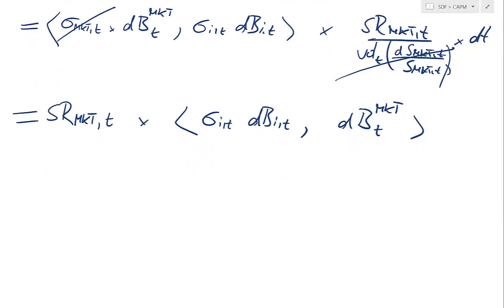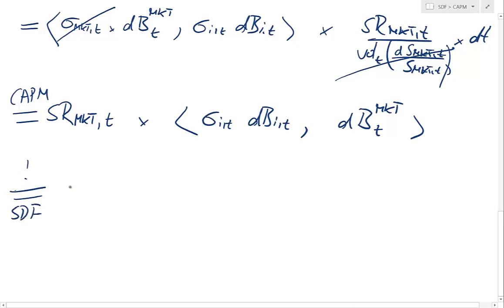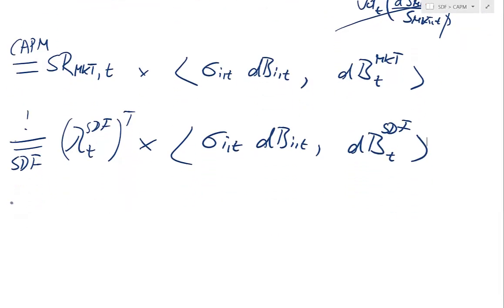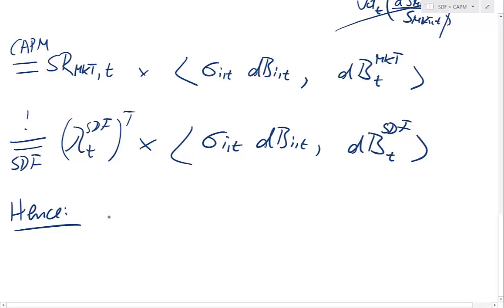This is based on the CAPM, and it needs to equal — based on the SDF representation — lambda_SDF prime times the instantaneous covariation of instrument i with the SDF shock. Hence, you really see that the CAPM is just a special model of a more general SDF model.